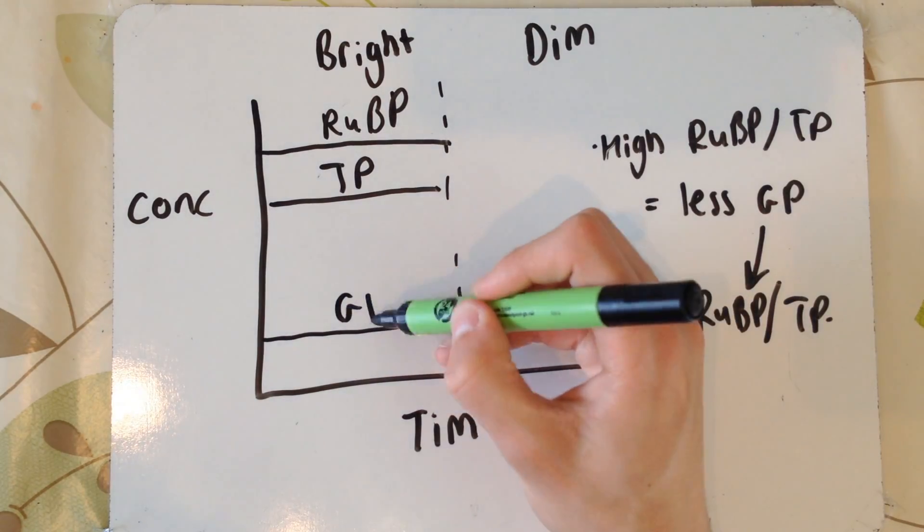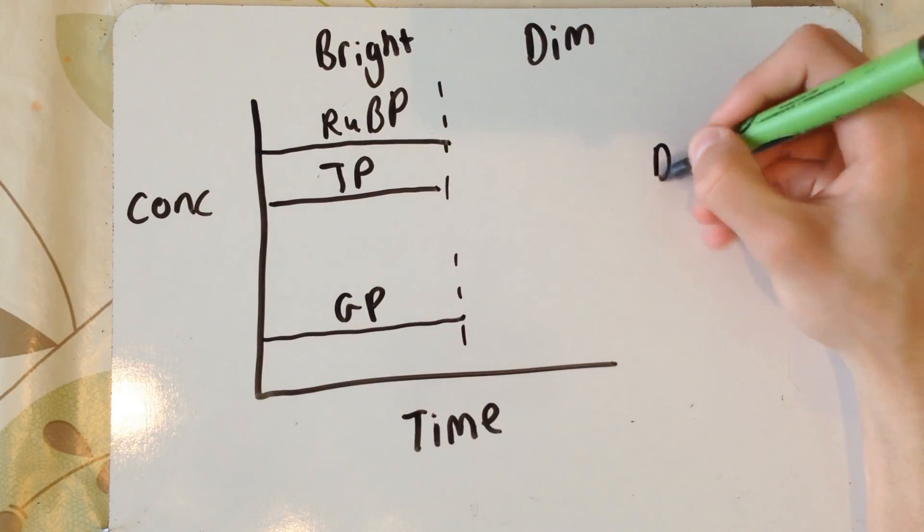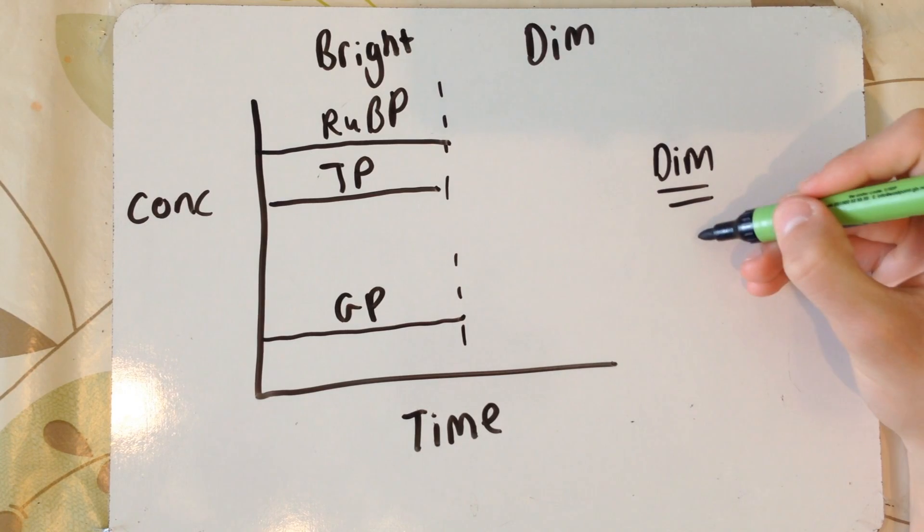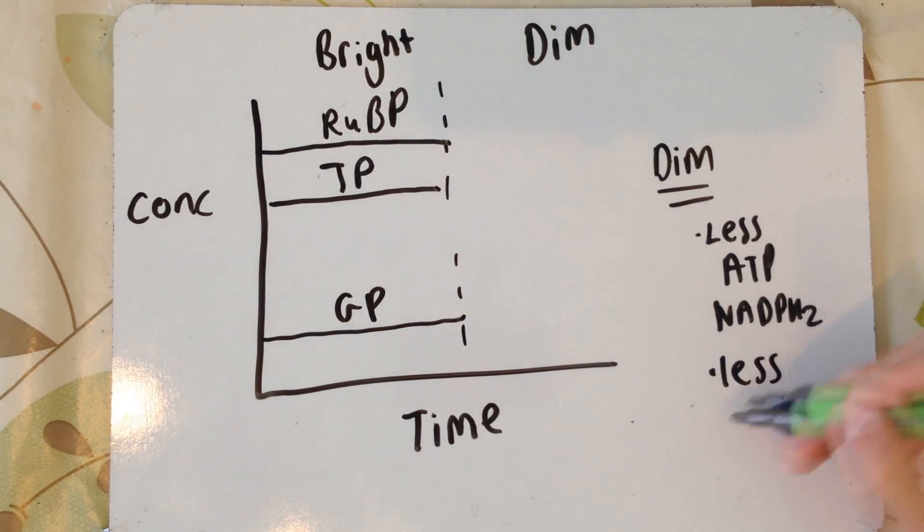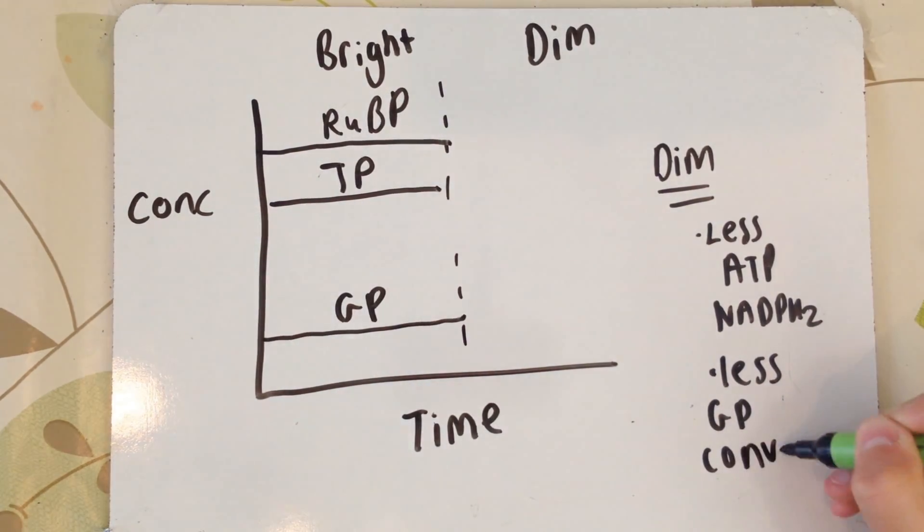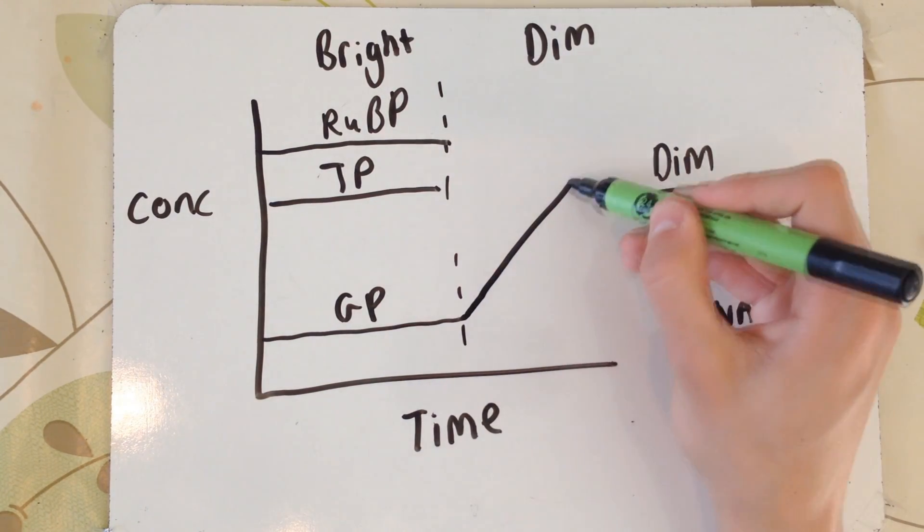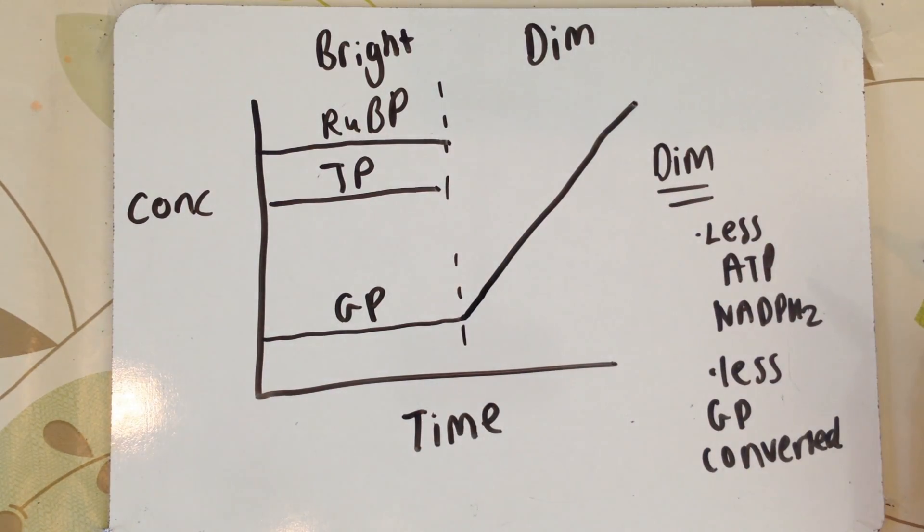But in dim light, that means it's going to be less ATP made and less reduced NADP, which means not as much GP is converted into triose phosphate and RUBP. That means you've got more GP. The concentration of GP in dim light increases greatly. It's pretty self-explanatory. If you've got a lot more GP, that means less GP is being converted, so less products are going to be made. So you've got lower concentrations of RUBP and TP.